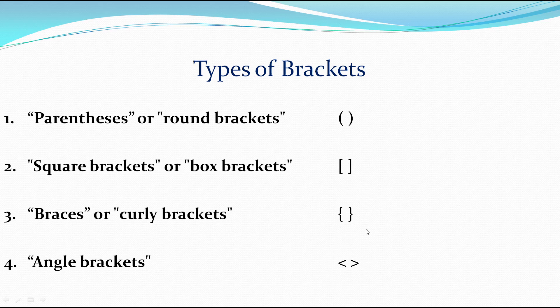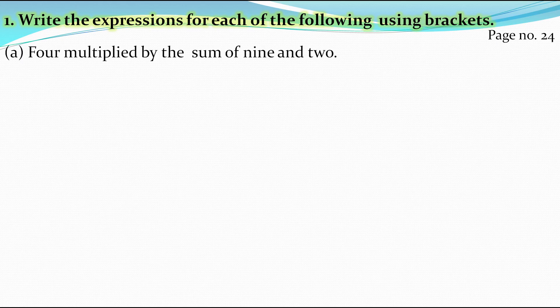Now let's start solving the sums. On page number 24, the question is: write the expressions for each of the following using brackets. The first expression is 4 multiplied by the sum of 9 and 2. Here, sum of 9 and 2 is the separate expression, so first we will write 9 plus 2.